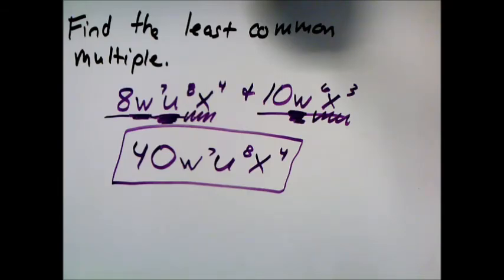w to the 7th goes into w to the 7th, and w to the 6 goes into w to the 7th because it's smaller than it. So the variables are almost easier. Their factors kind of aren't hidden.